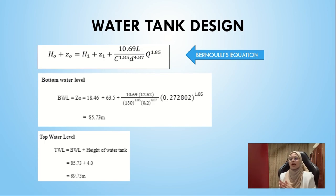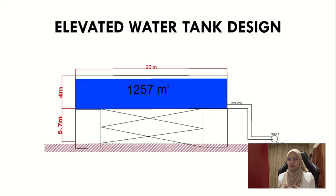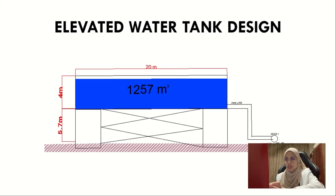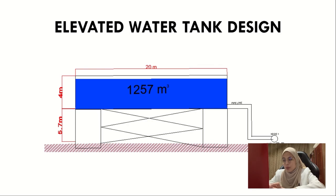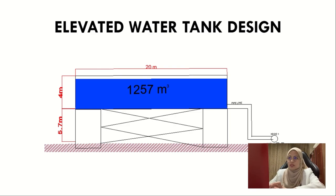Lastly, this is the elevated water tank design — the final drawing showing a tank that can store 1,257 cubic meters of water, with a diameter of 20 meters, a tank height of 4 meters, and an elevation of 5.7 meters. That concludes the major part and the design for our water reticulation system. Thank you.